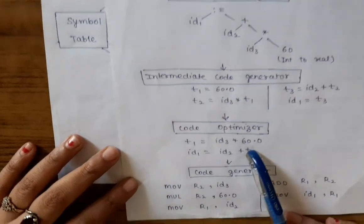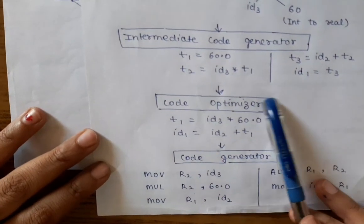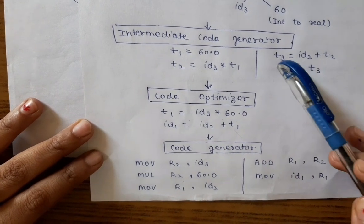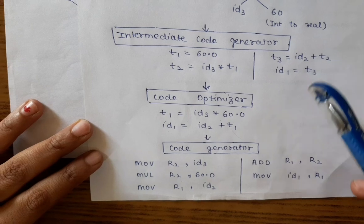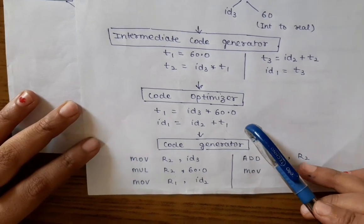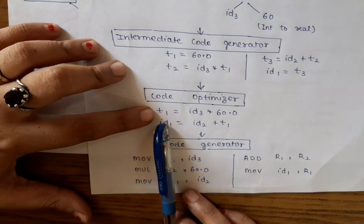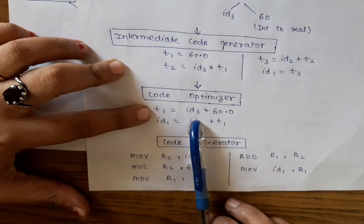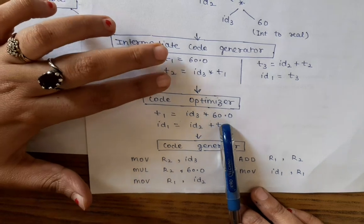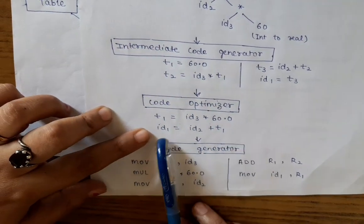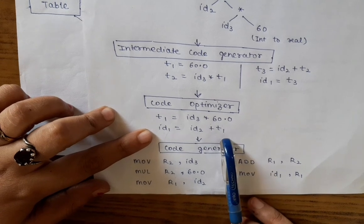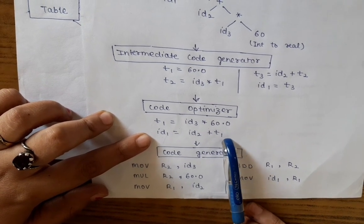The next phase is code optimizer. This is an optional phase. It optimizes the code which is produced in the intermediate code generator. If you need to optimize the code, then we use this phase. Now here, T1 equals identifier 3 multiplied by 60. These two lines are optimized into one line. Now identifier 1 equals identifier 2 plus T1, means temporary variable 1.